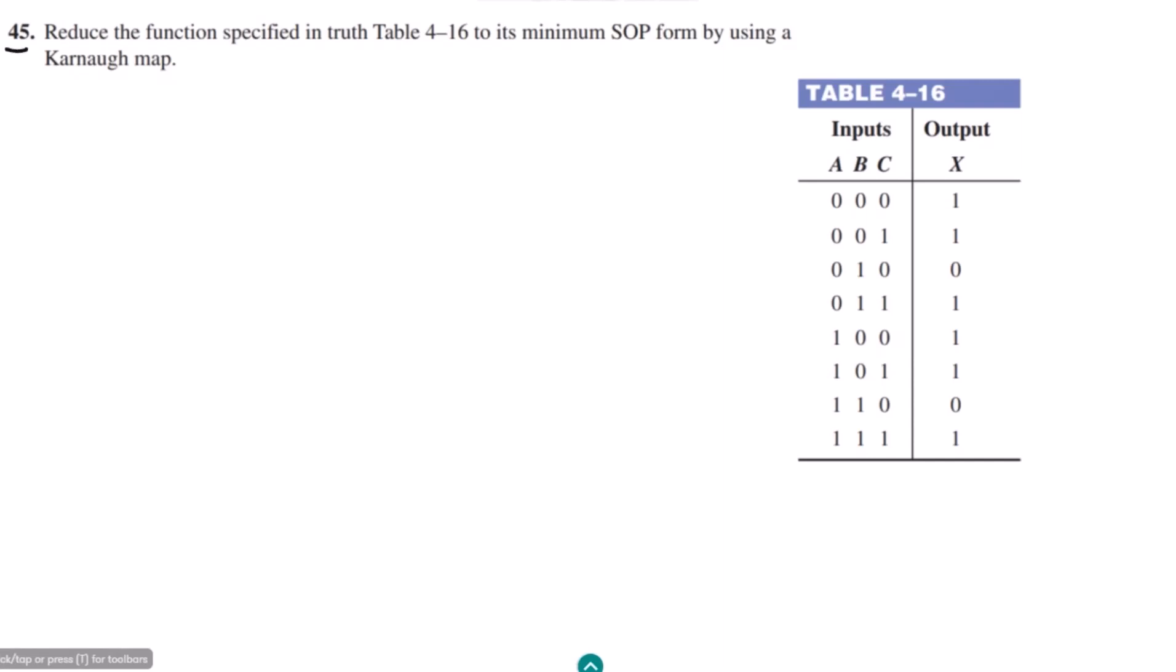Welcome back guys, this is question 45. The question is reduce the function specified in table 4.16 to its minimum SOP form by using a Karnaugh map.